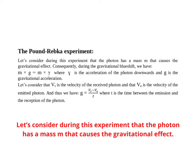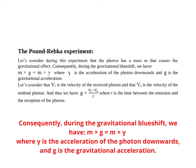Let's consider during this experiment that the photon has a mass m that causes the gravitational effect. Consequently, during the gravitational blue shift, we have m times g equals m times gamma, where gamma is the acceleration of the photon downwards, and g is the gravitational acceleration.